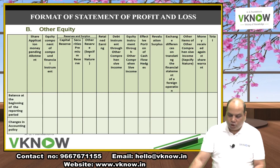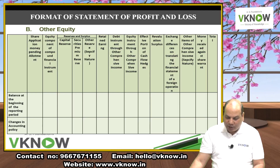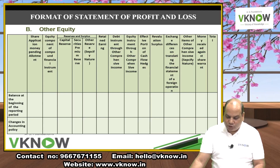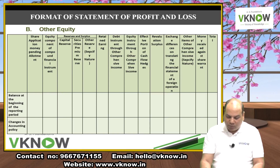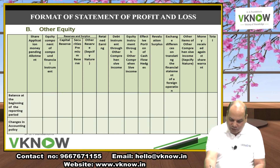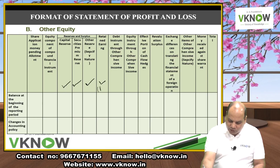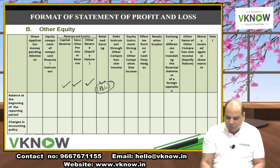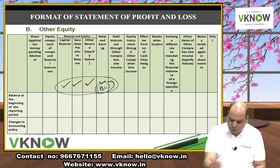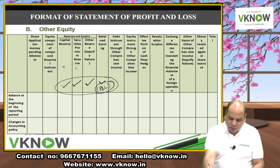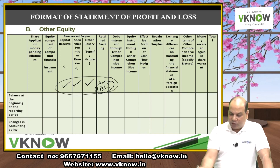For most questions, you'll only need columns for capital reserve, securities premium, other reserves (like general reserve), and retained earnings. Don't draw every column in the format — only draw what's needed. If a column isn't required, skip it. If something extra is needed not in the format, insert it.